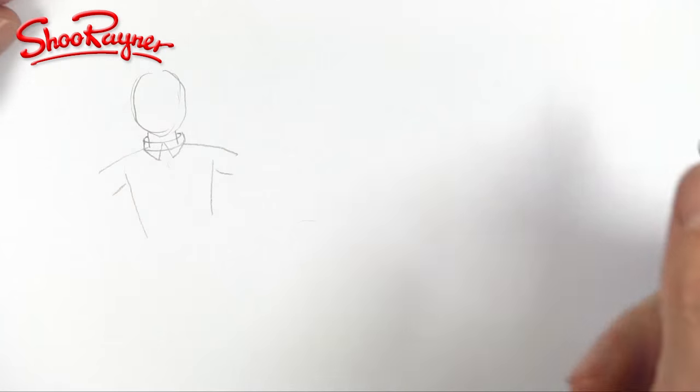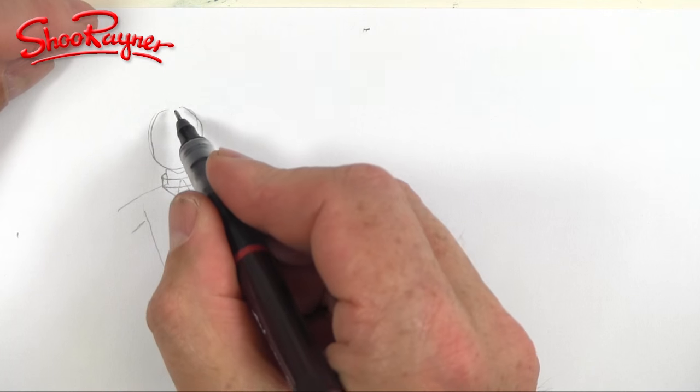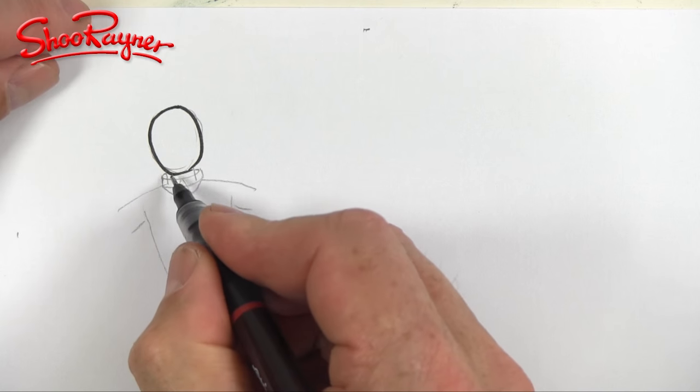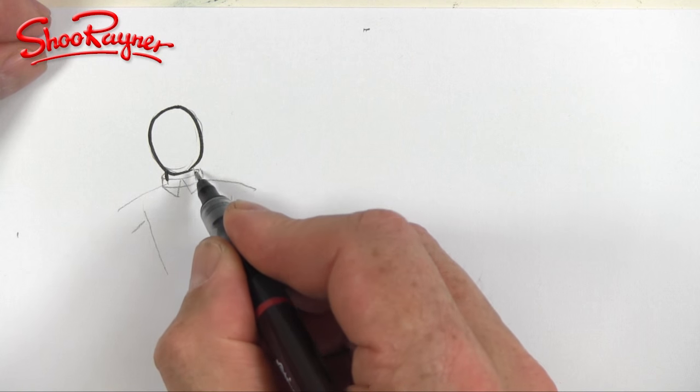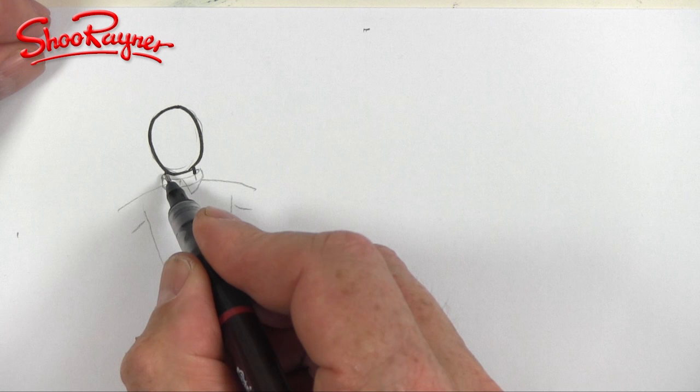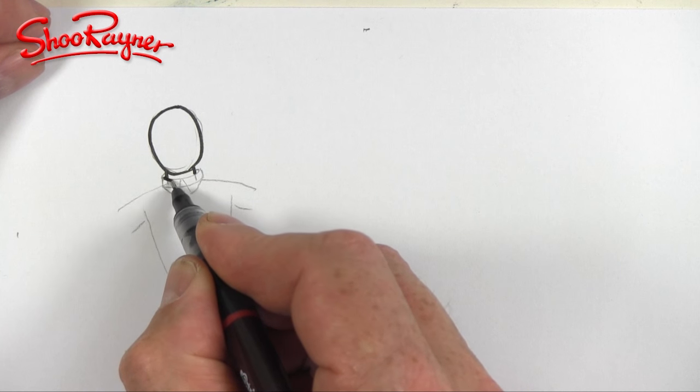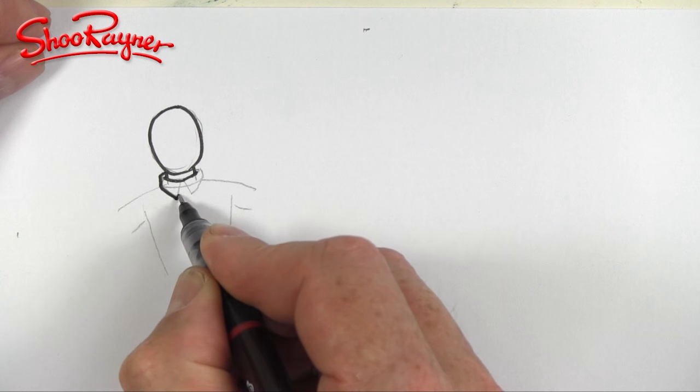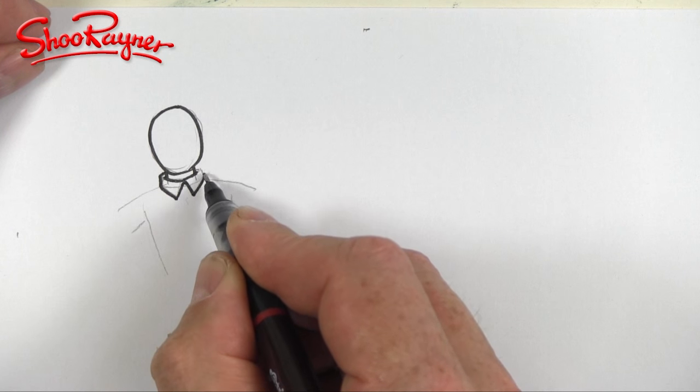Like that and then that will come to there and that will come to there. So if we draw it in ink, bring it down a little bit. If we draw it in ink then the neck will kind of go into the collar and that will come around and behind it. If that makes sense.